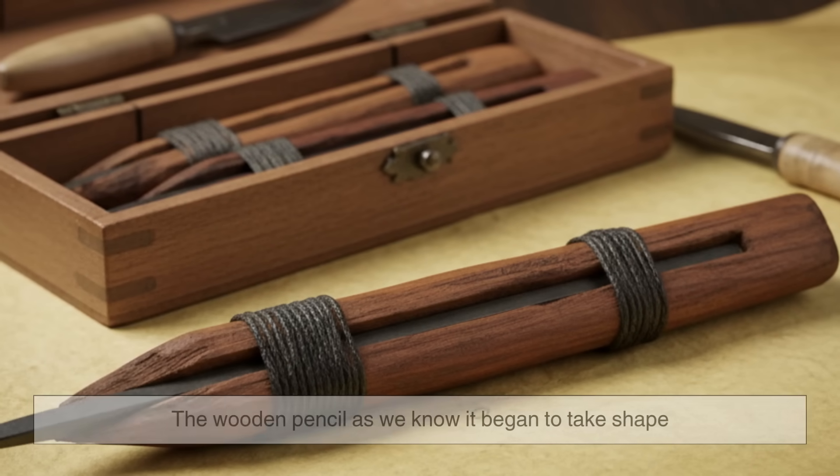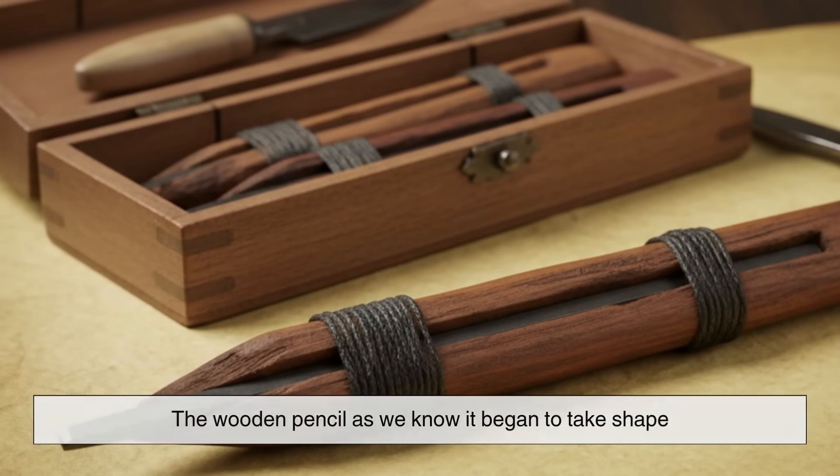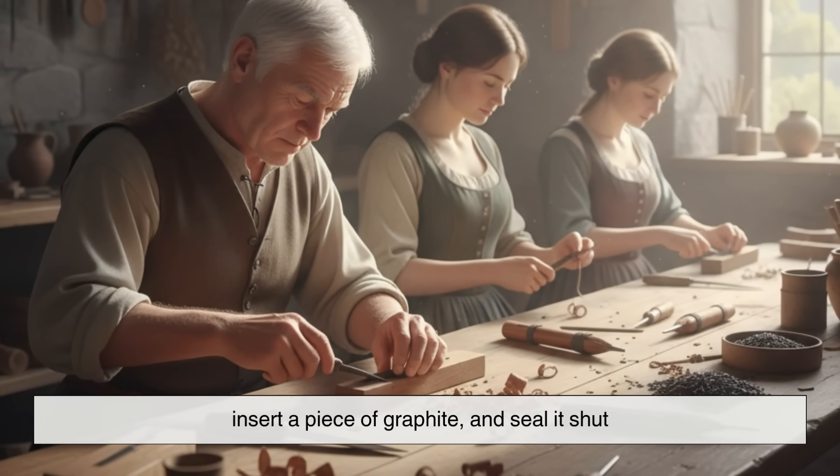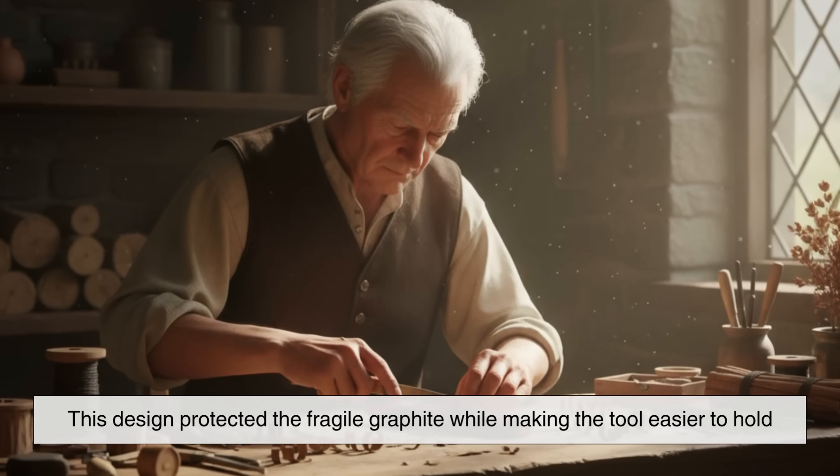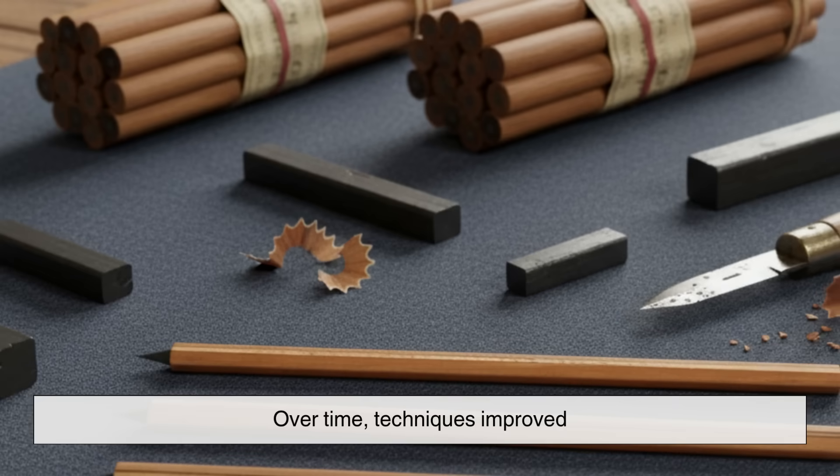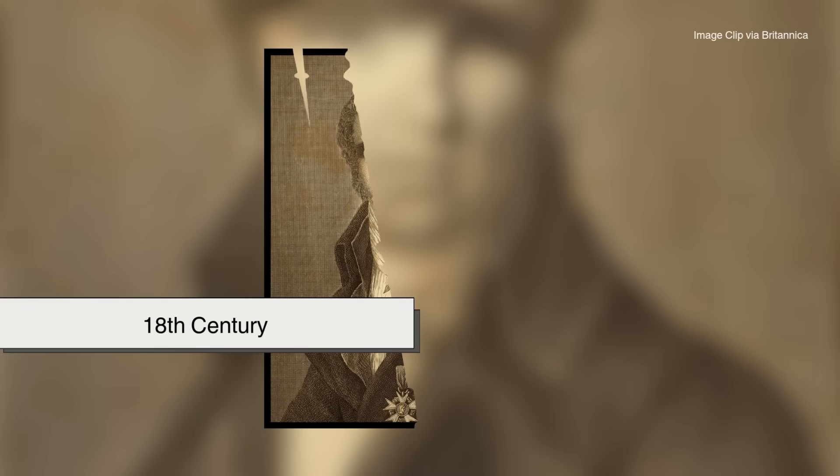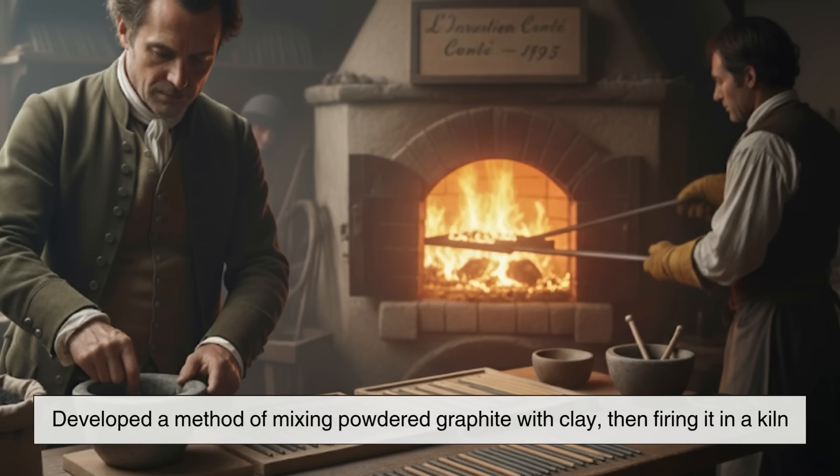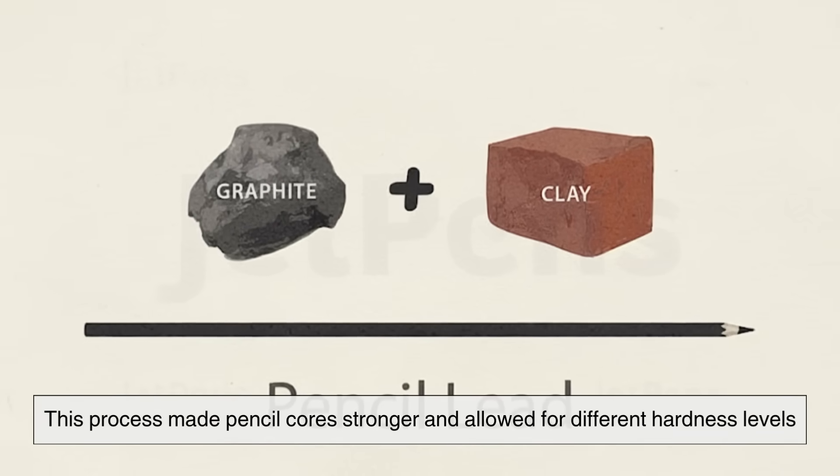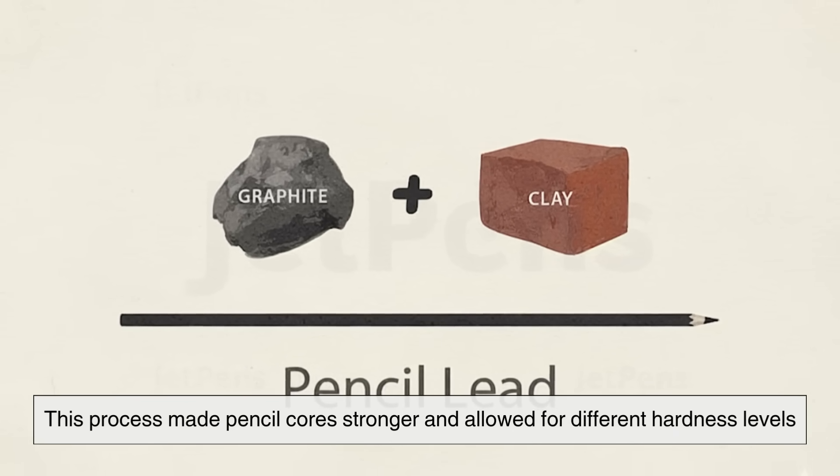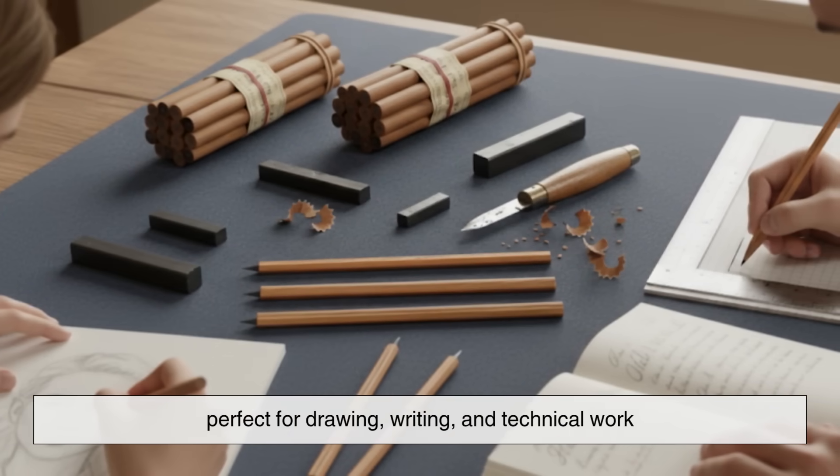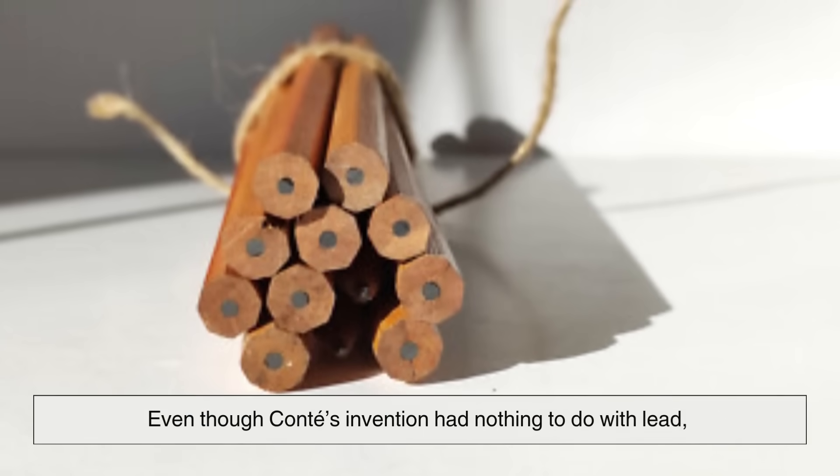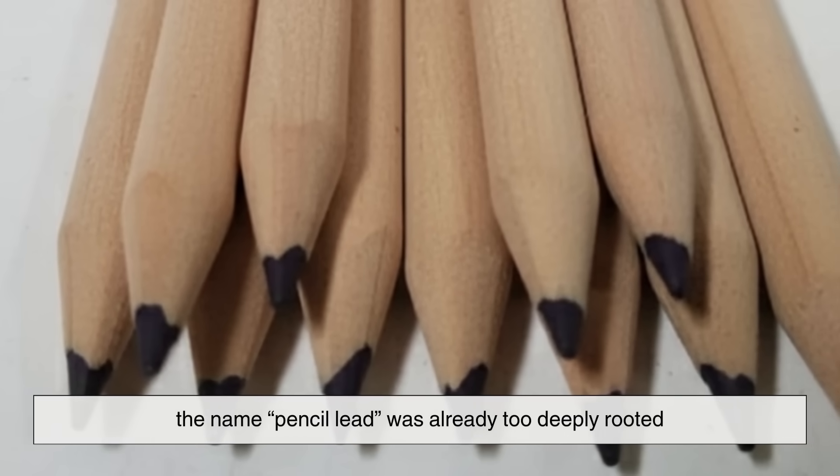By the late 16th century, the wooden pencil as we know it began to take shape. Craftsmen would carve a stick of wood, hollow out the center, insert a piece of graphite, and seal it shut. This design protected the fragile graphite while making the tool easier to hold. Over time, techniques improved. By the 18th century, the Frenchman Nicolas-Jacques Conté developed a method of mixing powdered graphite with clay, then firing it in a kiln. This process made pencil cores stronger and allowed for different hardness levels, perfect for drawing, writing, and technical work. Even though Conté's invention had nothing to do with lead, the name pencil lead was already too deeply rooted in people's language to disappear.